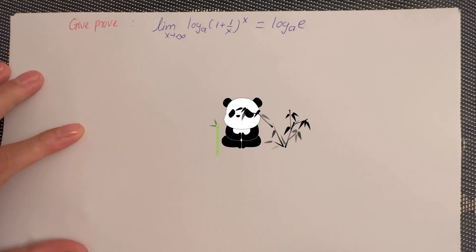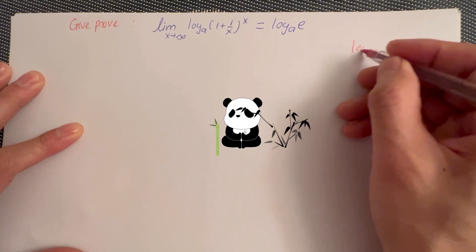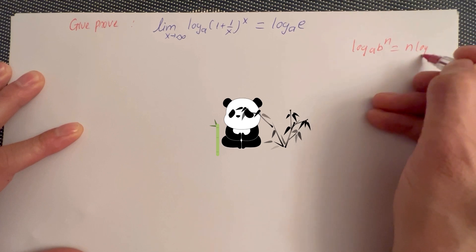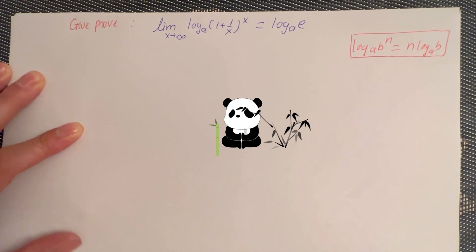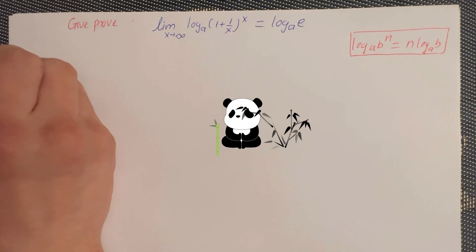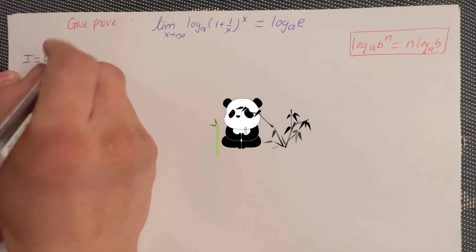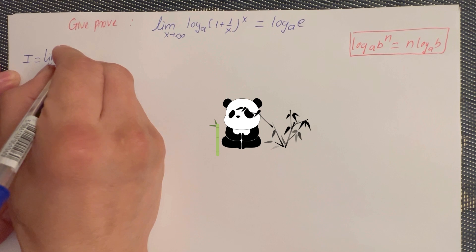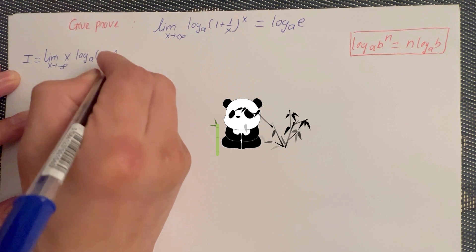Before you do it, you have to recall the formula: log A of B power n equals n times log A of B. Now you use it for that one, and then you can write the limit. On the left-hand side, you put x outside and bring the power down, so you get log A of 1 plus 1 over x.